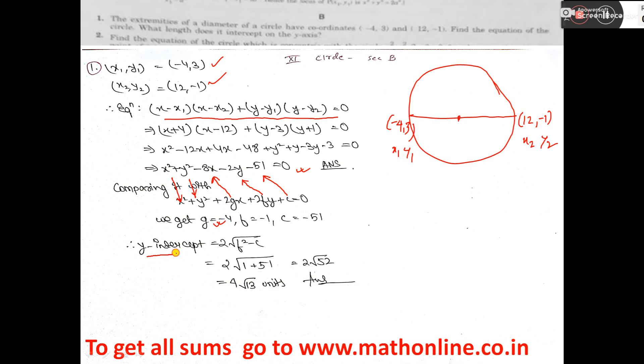Now y-intercept formula is... y-intercept actually means, let's say this is one circle, so this is called y-intercept. So its formula is 2√(f² - c). Now f, here f is (-1)² that is 1, minus c, so minus (-51) that is plus 51, so this is the answer.